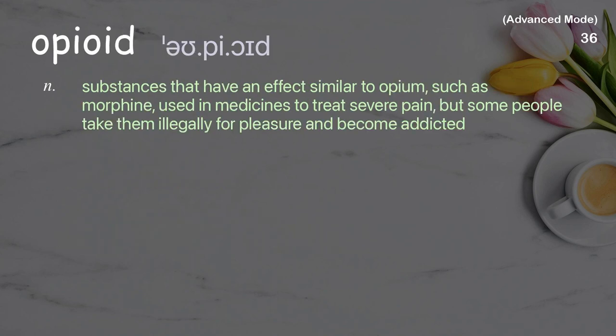Opioid: substances that have an effect similar to opium, such as morphine, used in medicines to treat severe pain, but some people take them illegally for pleasure and become addicted.